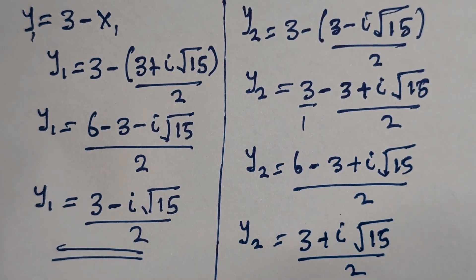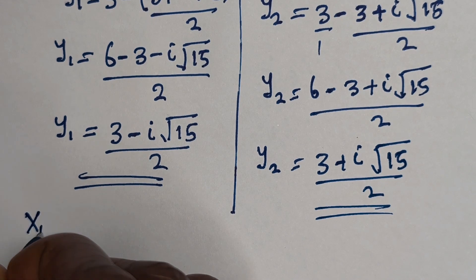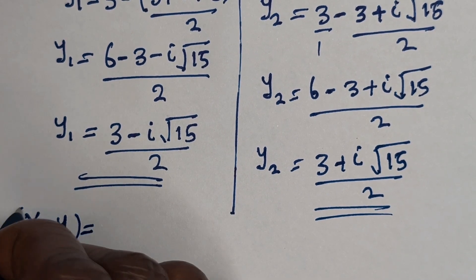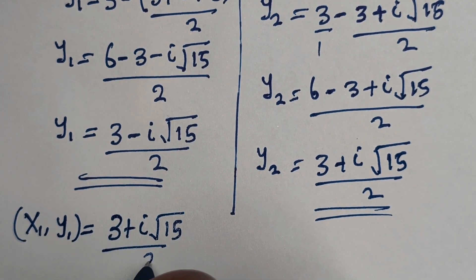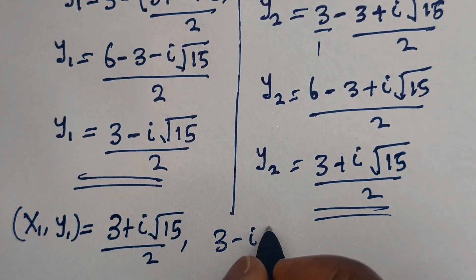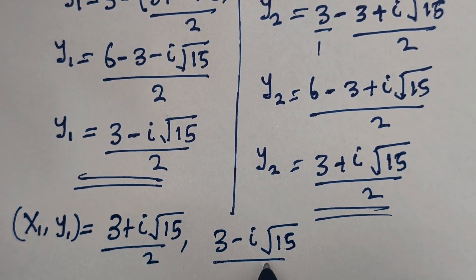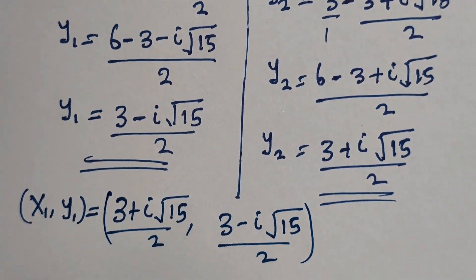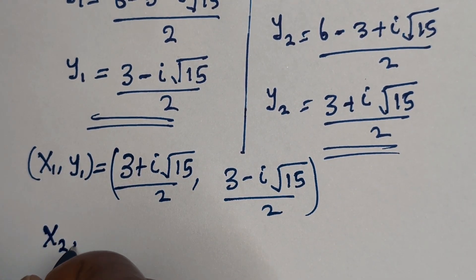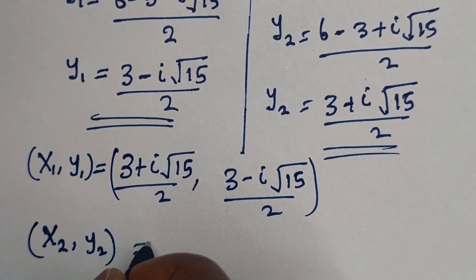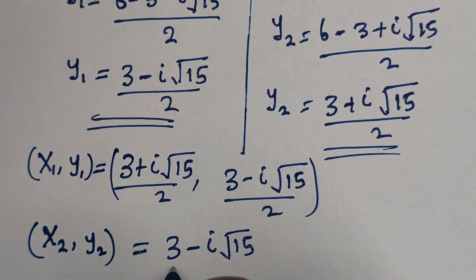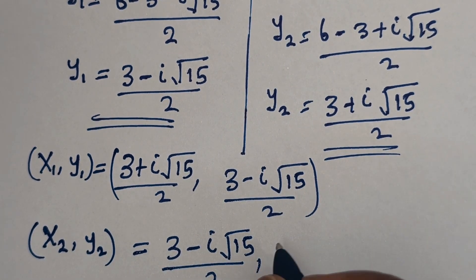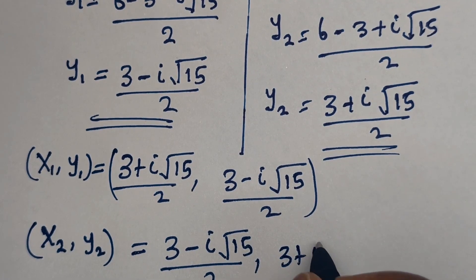Therefore our final answers are: S1, Y1 is equal to (3 plus i√15)/2 comma (3 minus i√15)/2, and S2, Y2 is equal to (3 minus i√15)/2 comma (3 plus i√15)/2.